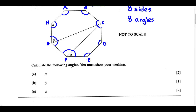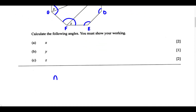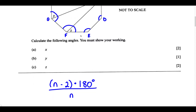Now it says calculate the following angles — you must show your work. For part A, they want us to calculate angle X. Angle X is one of the angles that makes up the 8 interior angles of this octagon. To calculate angle X, the formula we're going to use is (N minus 2) multiplied by 180 degrees, divided by N. This formula is used to measure one interior angle in a regular polygon.